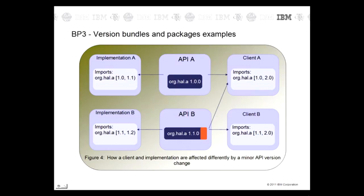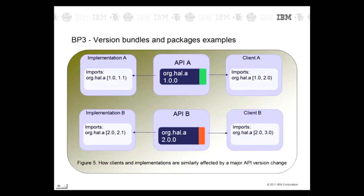And client B can only use API B. In this final example, API B has a major version change. Client A can no longer use API B because its version range is from 1.0 to 2.0, but does not include 2.0. And client B can only use API B. As we can see from these three examples, a change in the major or minor version affects the implementation and client bundles differently.